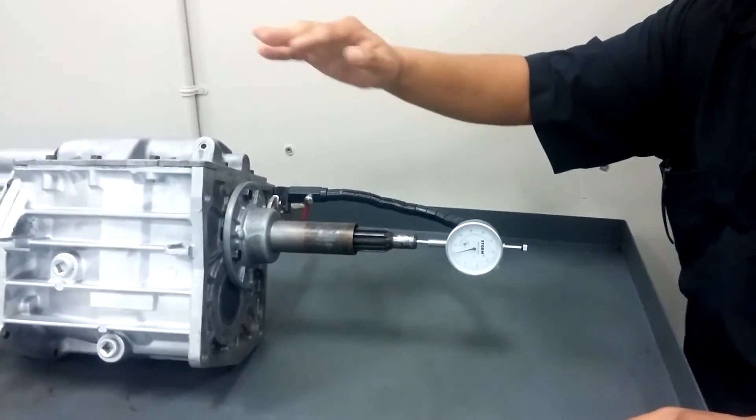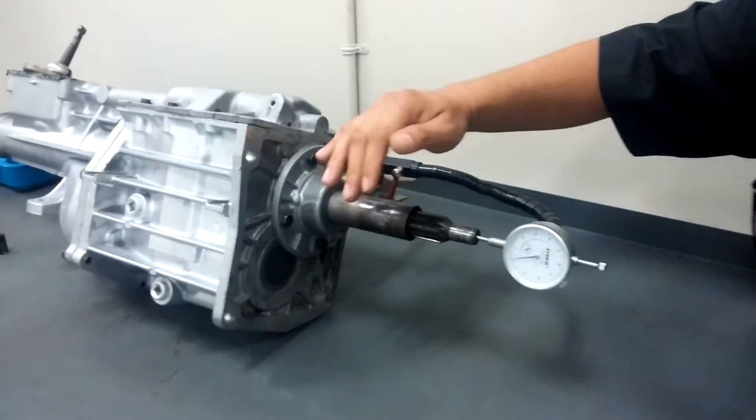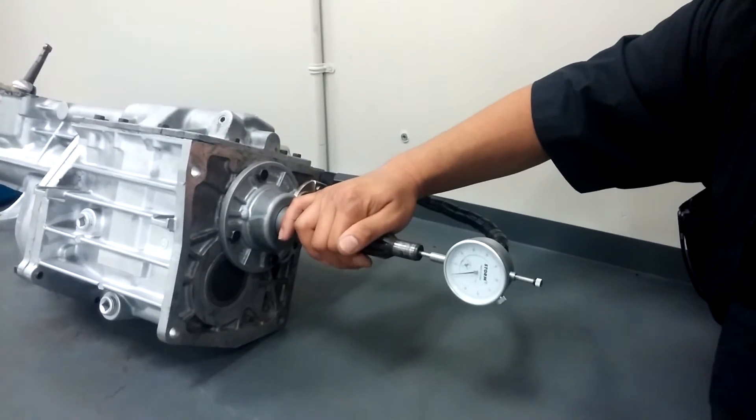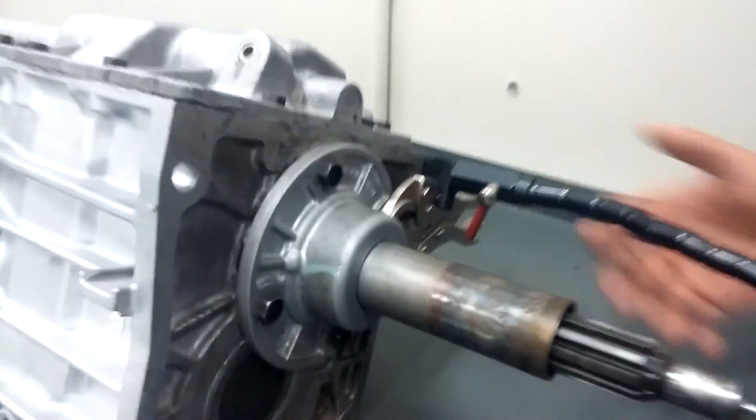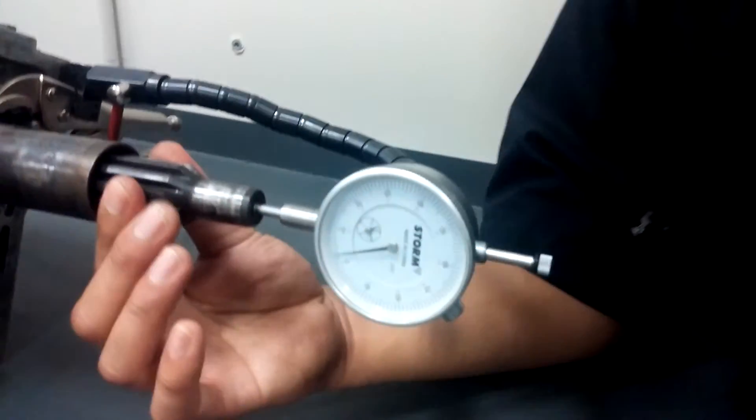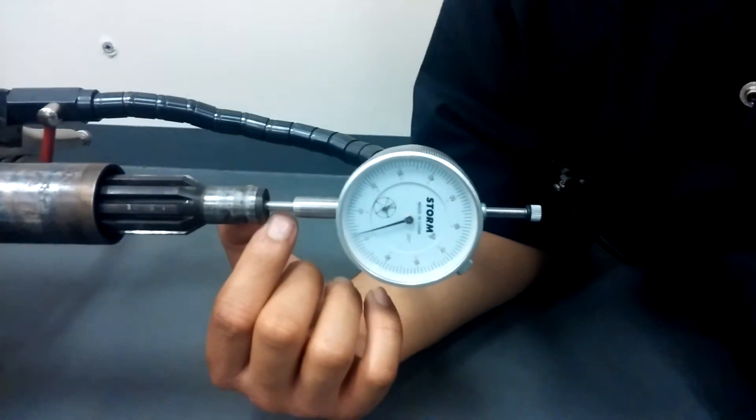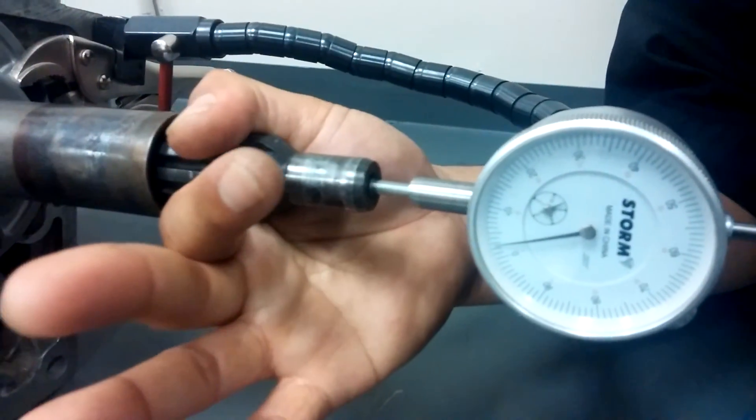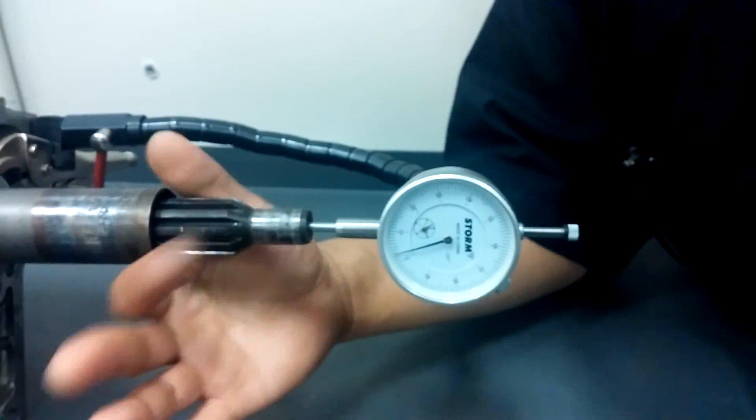Oh yeah, to measure the end play I forgot to mention you're also going to need a dial indicator here that I have mounted already. You're going to want to put it right there and pull in and out.